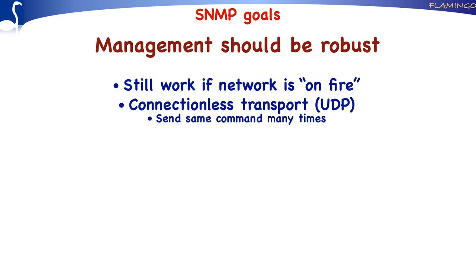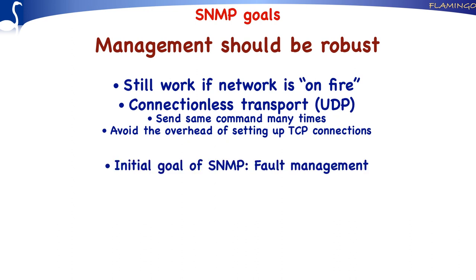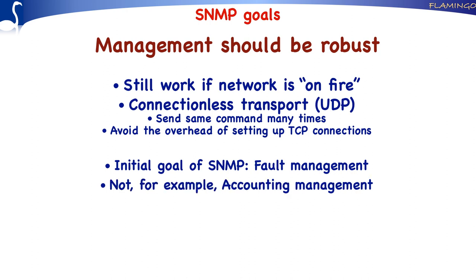Assume that we would use TCP. Then we would have to set up TCP connections, and setting up such connections may already be impossible if many packets get lost. From this, we can more or less conclude that one of the important initial goals of SNMP was fault management. It's clear that SNMP was not designed primarily with accounting management in mind, because if you do accounting management, it is not acceptable that you lose management information — the bills you create may not be correct, and customers will not accept it.